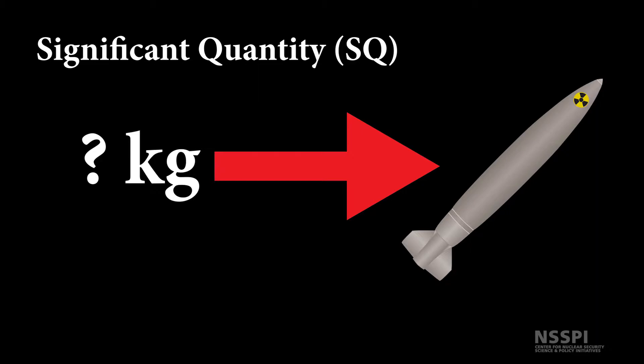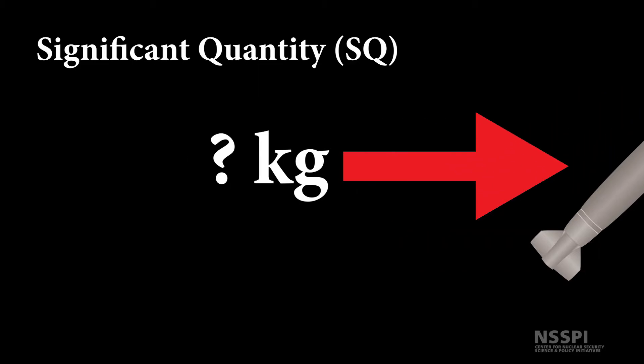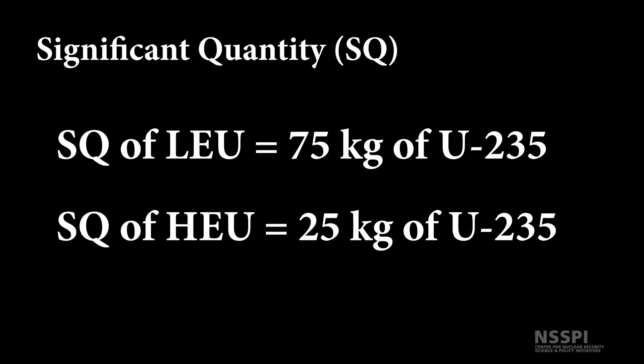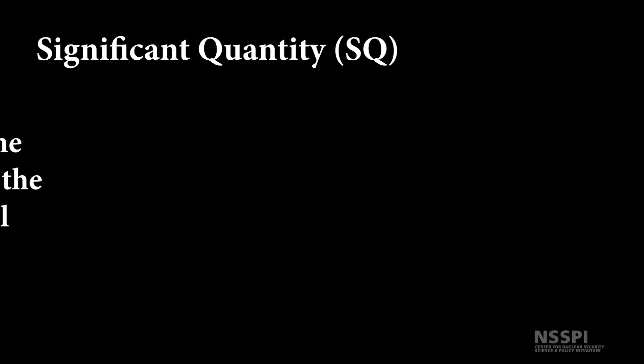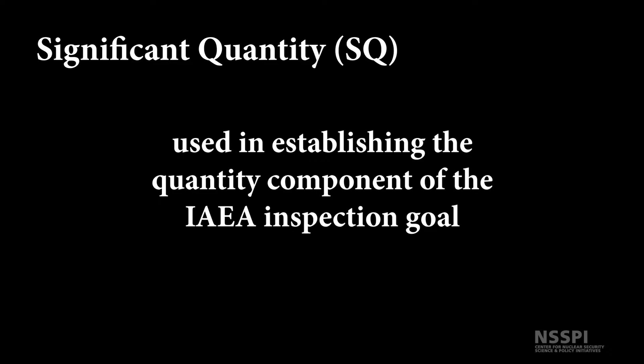This is why the significant quantity would be much larger for indirect-use materials than for direct-use materials. A much larger quantity of indirect-use materials, say low-enriched uranium, would be necessary to create enough highly enriched uranium for a weapon through the enrichment process. The number of significant quantities present in a nuclear facility is one of the criteria used by the IAEA in establishing how frequently they should inspect a given facility.